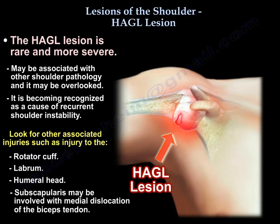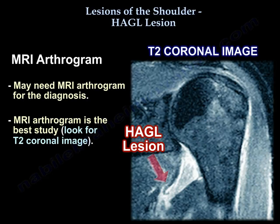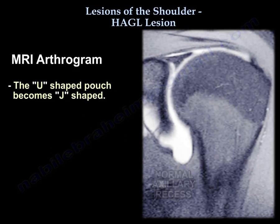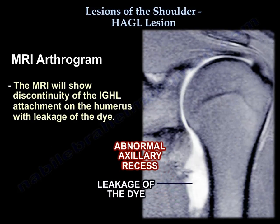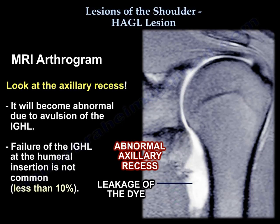The subscapularis could be involved, with medial dislocation of the biceps. It is a difficult diagnosis and may need an MRI arthrogram. MRI arthrogram is the best study — look for the T2 coronal image. The U-shaped pouch becomes J-shaped. The MRI will show discontinuity of the ligament attachment on the humerus with leakage of dye. Look at the axillary recess, which will become abnormal due to avulsion of that ligament.